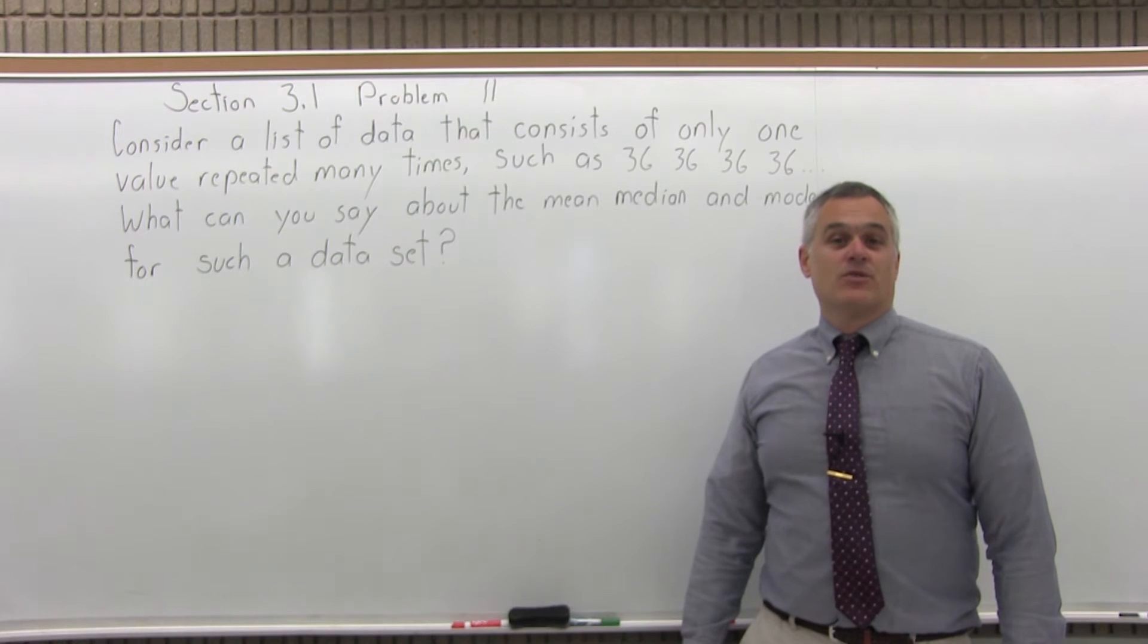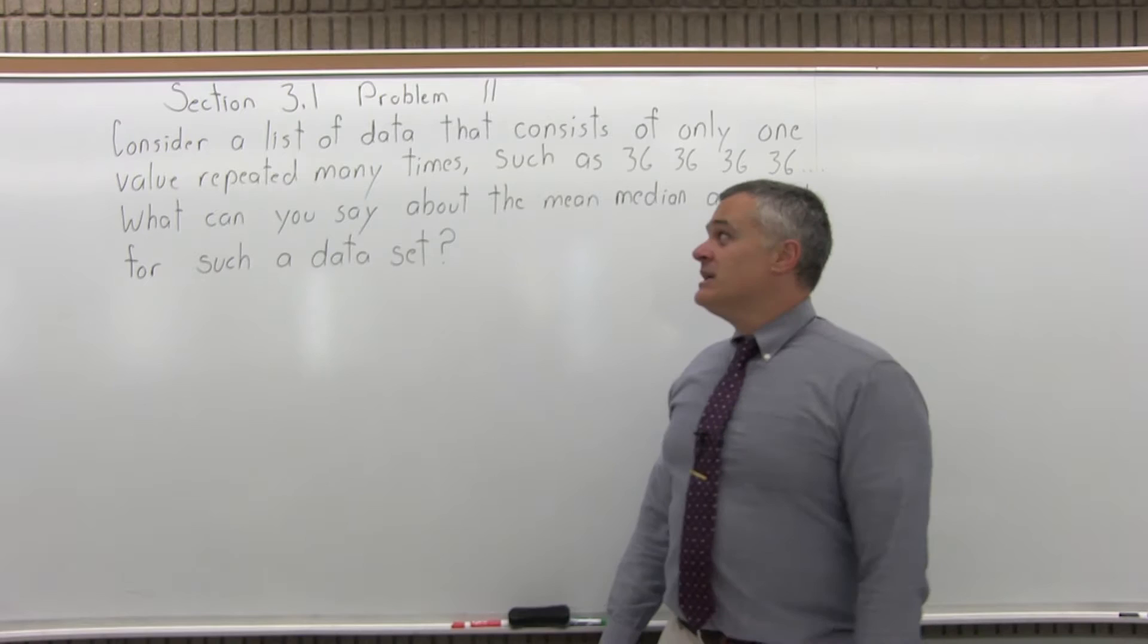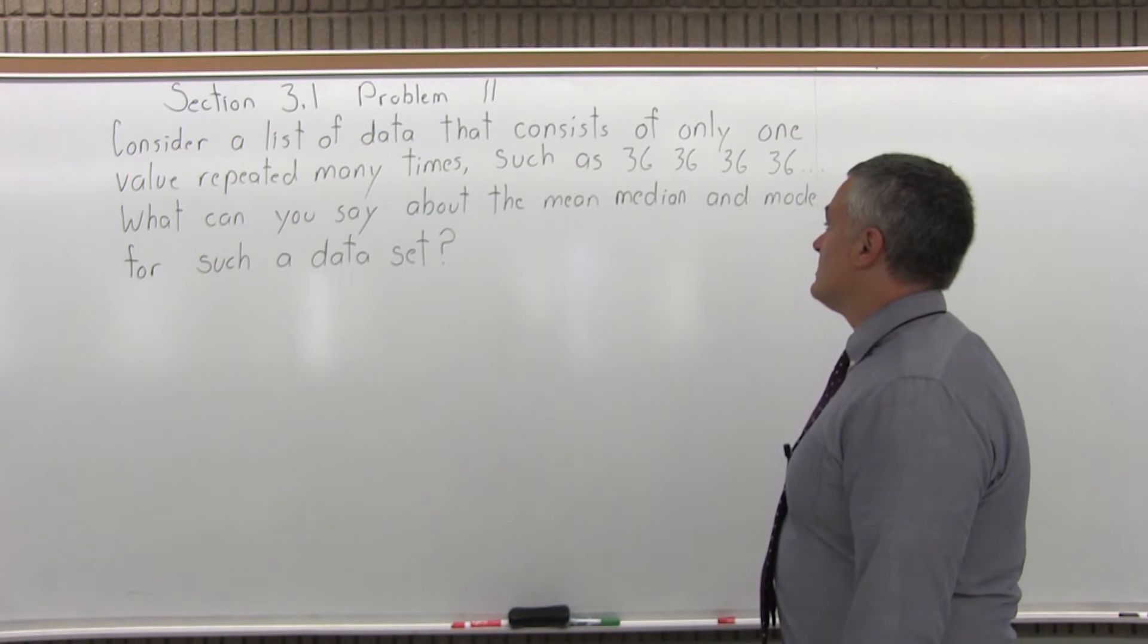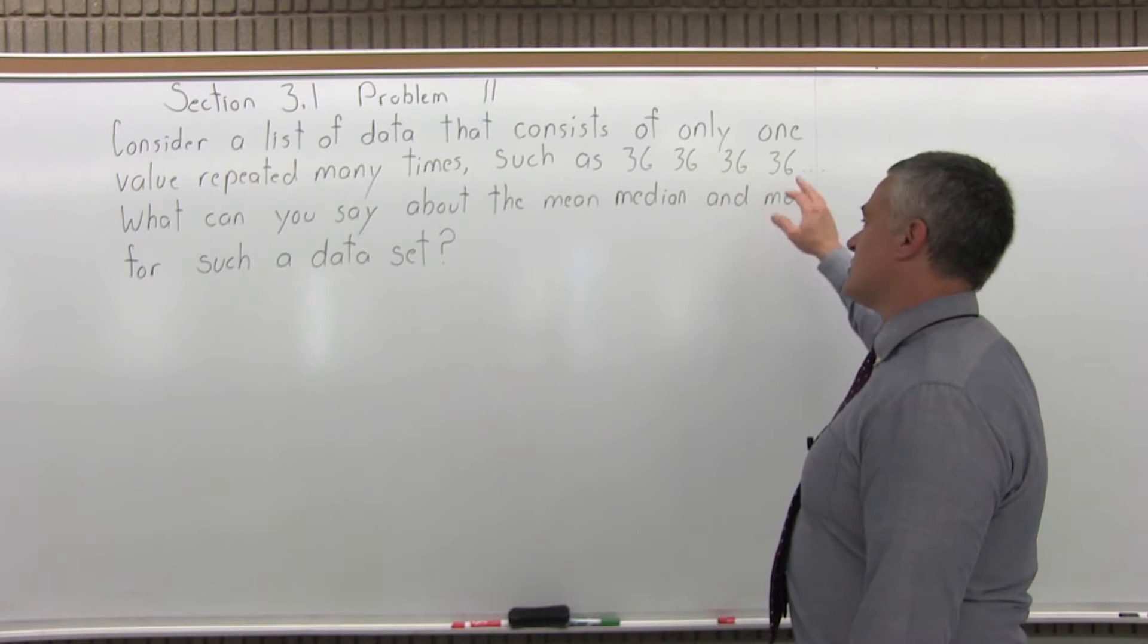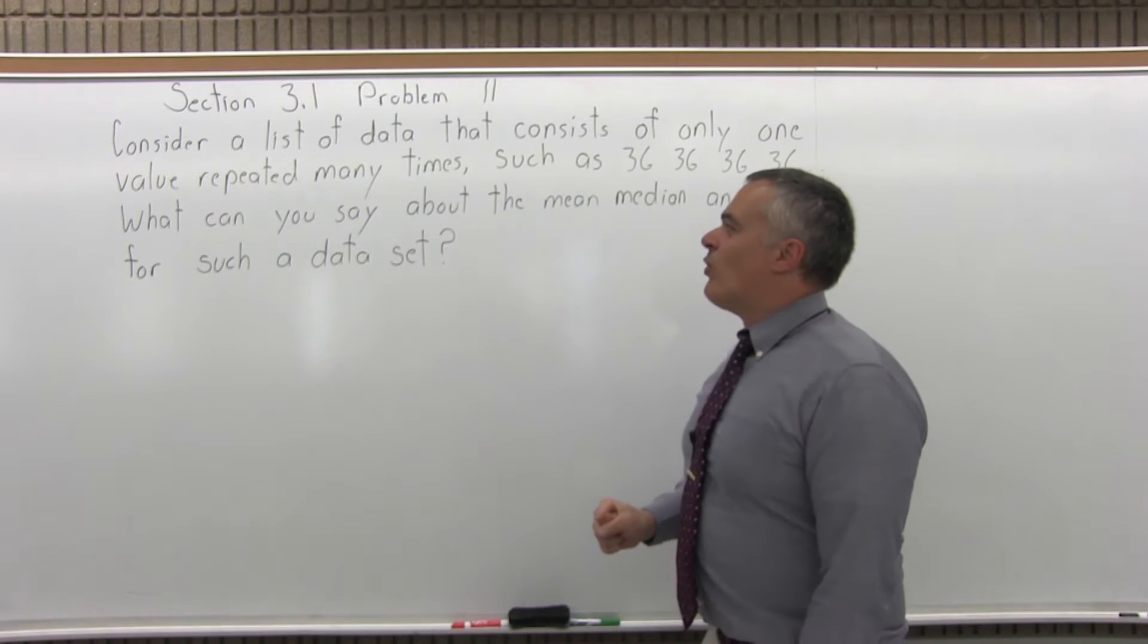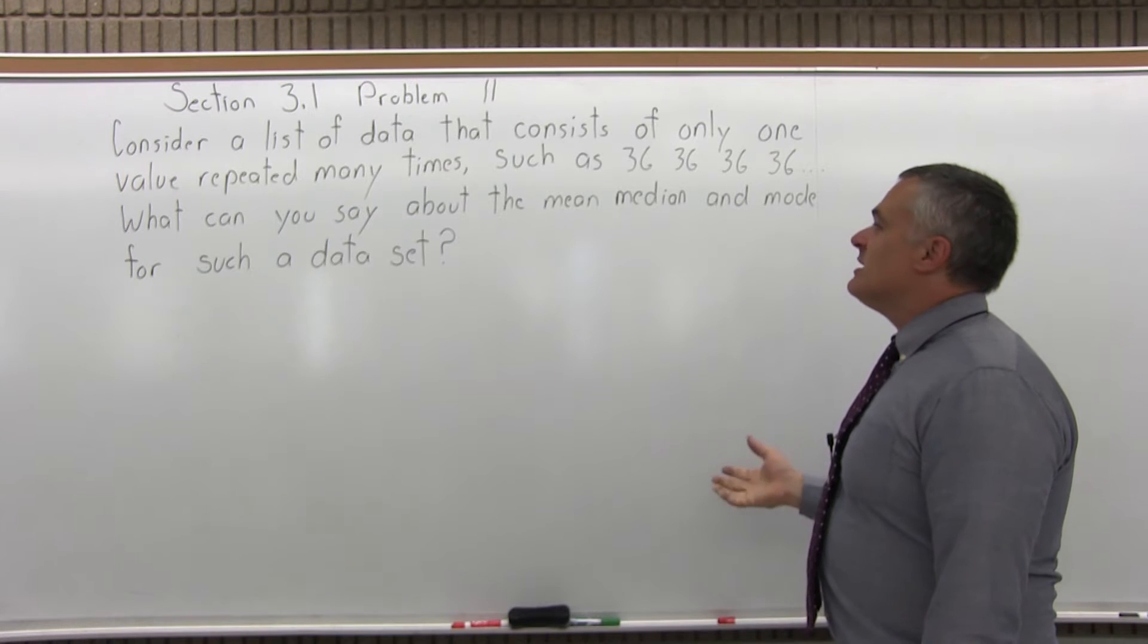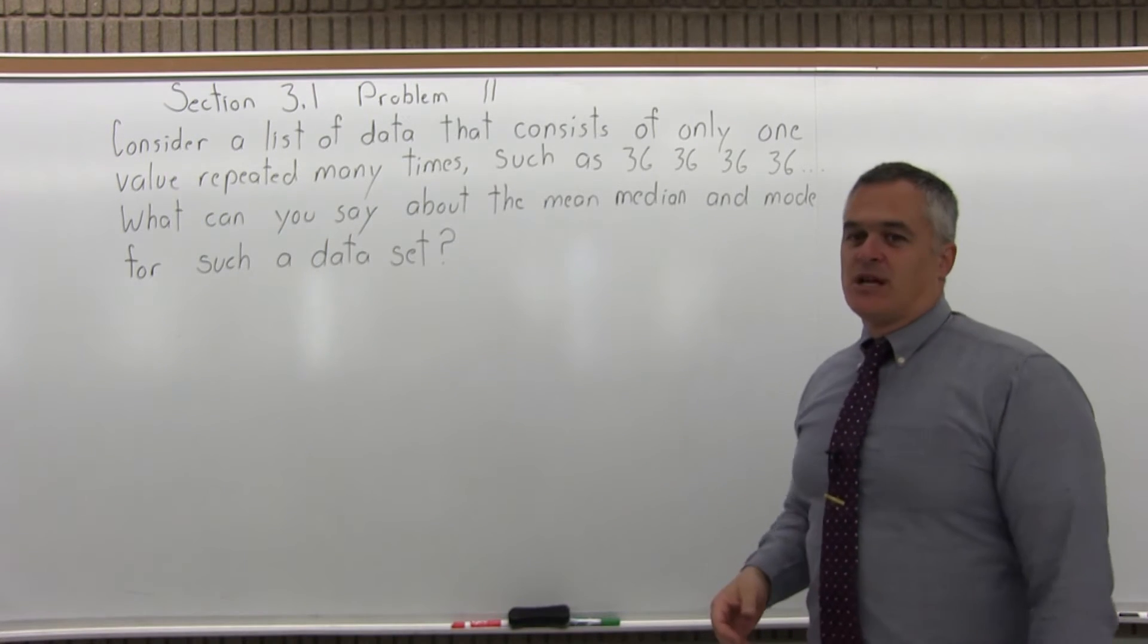This is Section 3.1, Problem 11. It says, consider a list of data that consists of only one value repeated many times, such as 36, 36, 36, just over and over again many times. What can you say about the mean, median, and mode of such a data set?